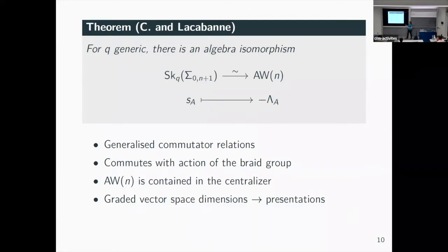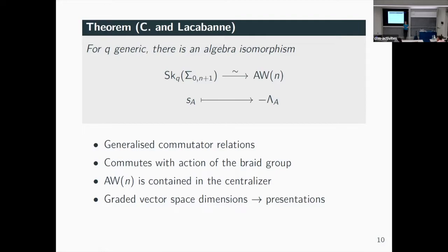Before going to the proof, let me mention some corollaries — sometimes they're not direct corollaries but intermediate steps. First: this isomorphism commutes with the action of the braid group. The skein algebra has a natural braid group action which rotates the punctures and twists loops around. The Askey-Wilson algebra has a braid group action given by conjugation with the R-matrix, and the isomorphism respects this.